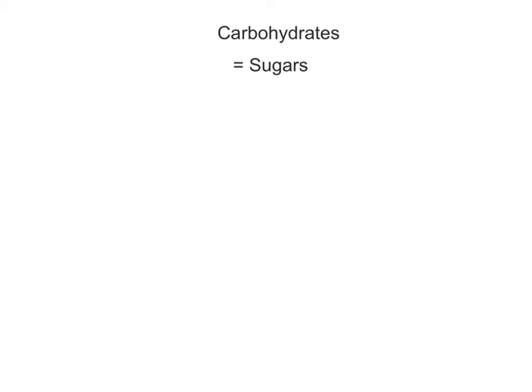Carbohydrates are a large and diverse group of organic molecules, collectively known as sugars. All carbohydrates are made out of atoms from only three elements: carbon, hydrogen, and oxygen, and comprise about 3% of our overall body mass. The word carbohydrate means 'watered carbon,' referring to the fact that most carbohydrates have one water molecule for every carbon atom in their structure.